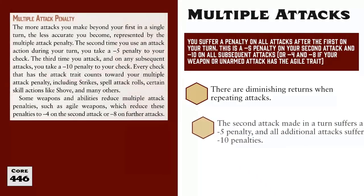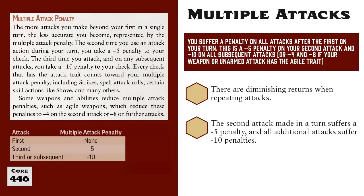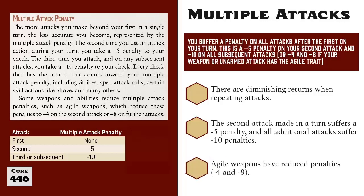The Multiple Attack Penalty says that every attack during a turn after the first suffers a penalty. There is a negative 5 penalty applied to the second attack in a turn, and a negative 10 penalty applied to the third. And if you are able to make more than 4 attacks in a turn thanks perhaps to the haste spell, then all attacks beyond the third also suffer the negative 10 penalty. There is one notable exception to this, and that is when fighting with a weapon that has the Agile trait, like Daggers, Short Swords, and Fists. If you use an Agile weapon, you only suffer a negative 4 penalty for the second attack made during a turn, and a negative 8 penalty for all further attacks.